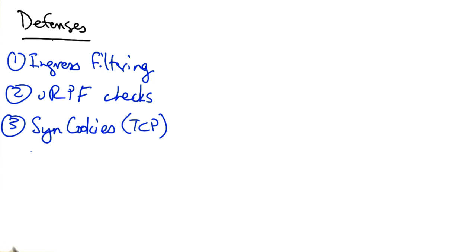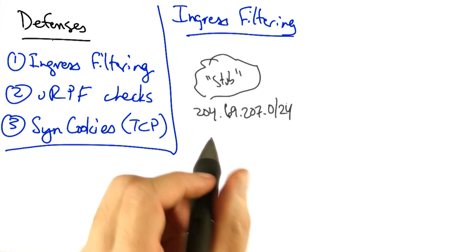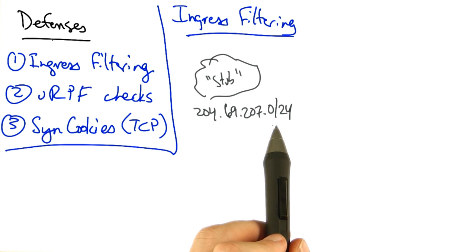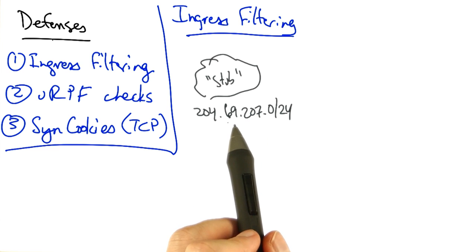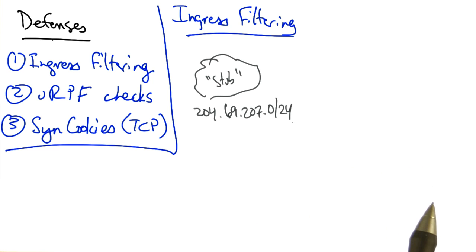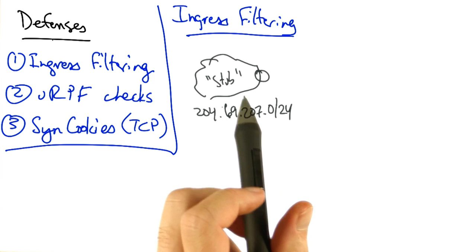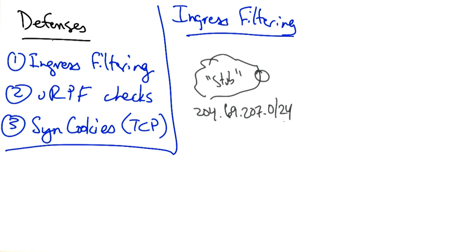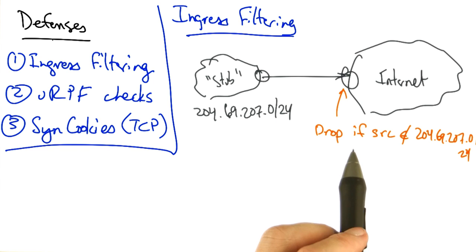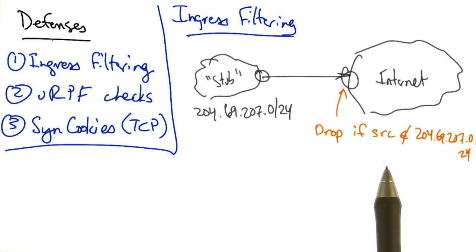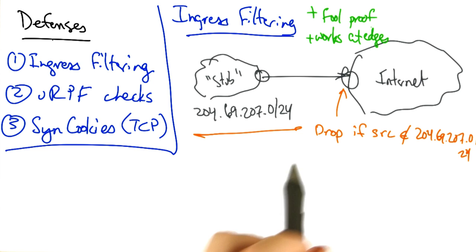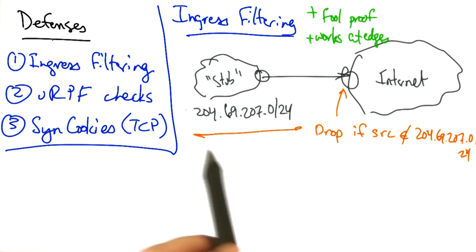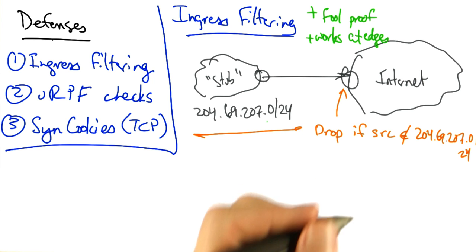Let's suppose that we have a stub autonomous system whose IP prefix was 204.69.207.0/24. Now if this is a stub network that has no other networks connected to it, and this is the only IP address space that this network owns, then the router that is immediately upstream of that internet service provider can simply drop all traffic for which the source IP address is not in the IP address range of that particular network. So this is foolproof, and it works at the edges of the internet, where it's very easy to determine the IP address range that's owned by a downstream stub autonomous system.